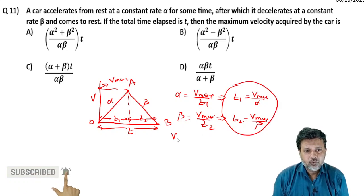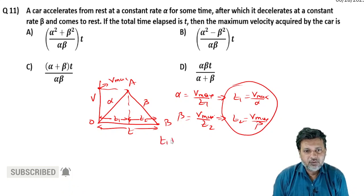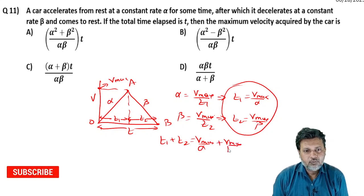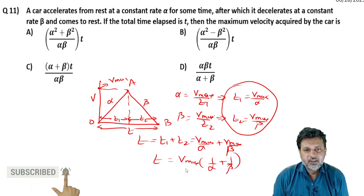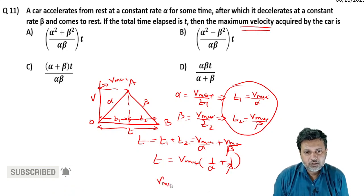दोनों equations को add करें तो T1 + T2 = V_max upon alpha + V_max upon beta। यह total time है, तो T = V_max × (1/alpha + 1/beta)। V_max निकालना है, तो V_max = T × (alpha × beta) / (alpha + beta)।